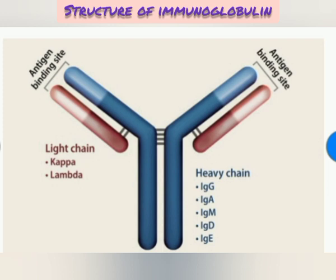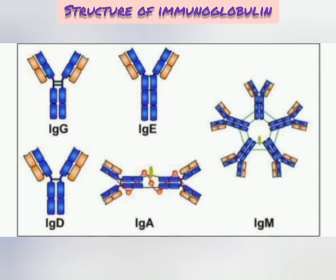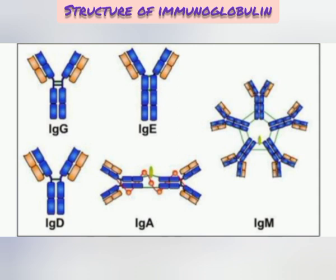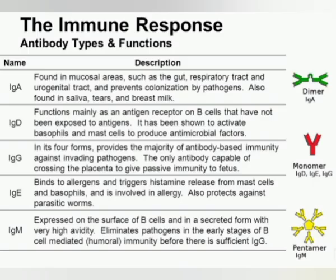Now I'll discuss the structure of a normal immunoglobulin — the Ig molecule. It consists of two heavy chains and two light chains, as seen in the diagram. The light chain comprises kappa and lambda, and the heavy chains comprise IgG, IgA, IgM, IgD, and IgE immunoglobulins. In the IgG molecule, the two heavy chains and two light chains are identical, creating two identical antigen-binding sites.